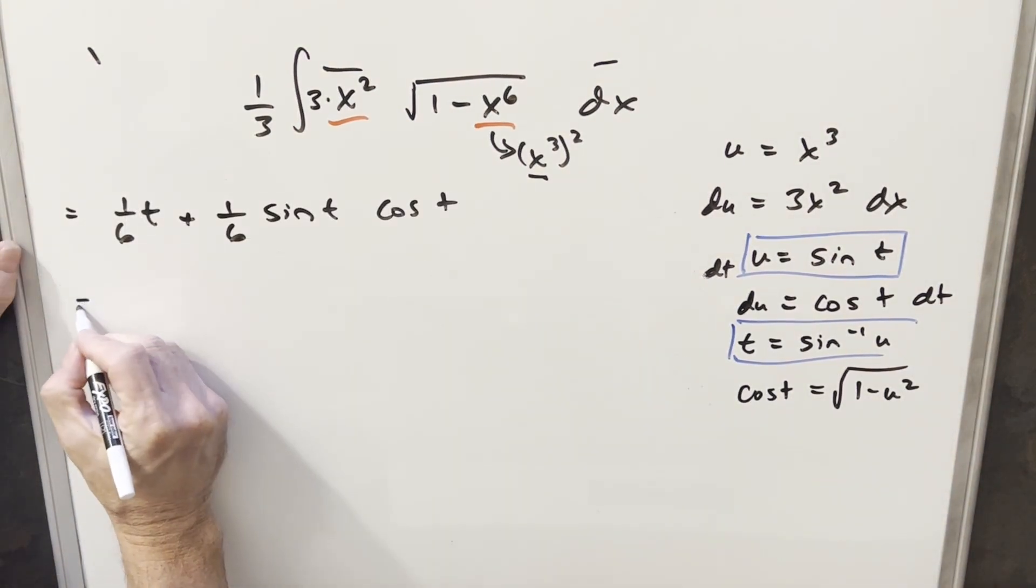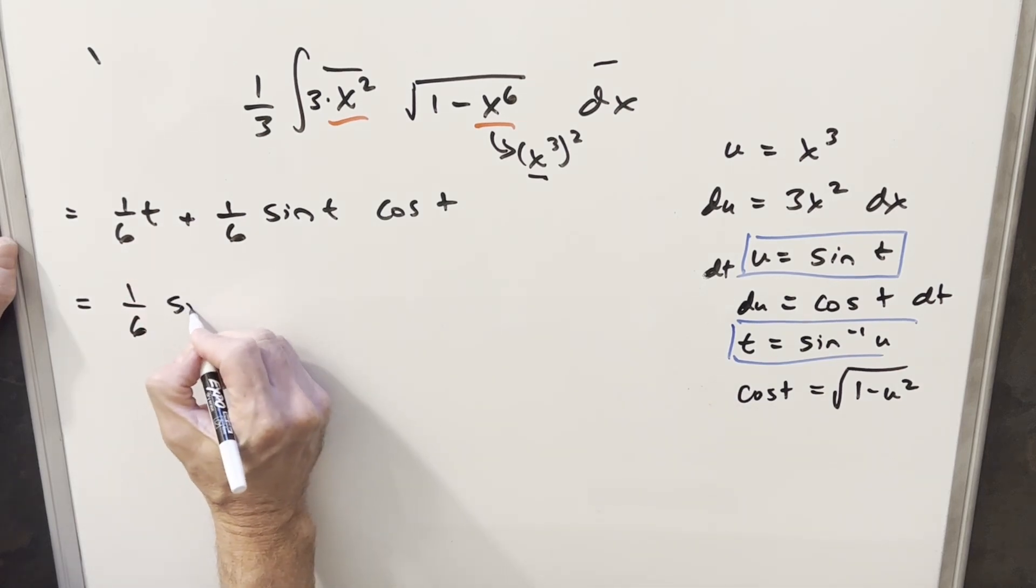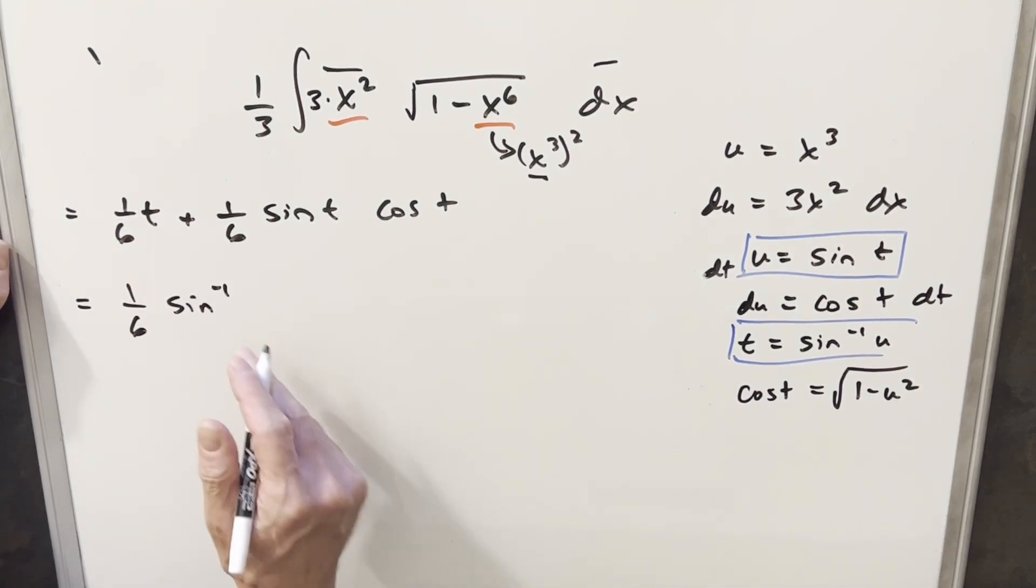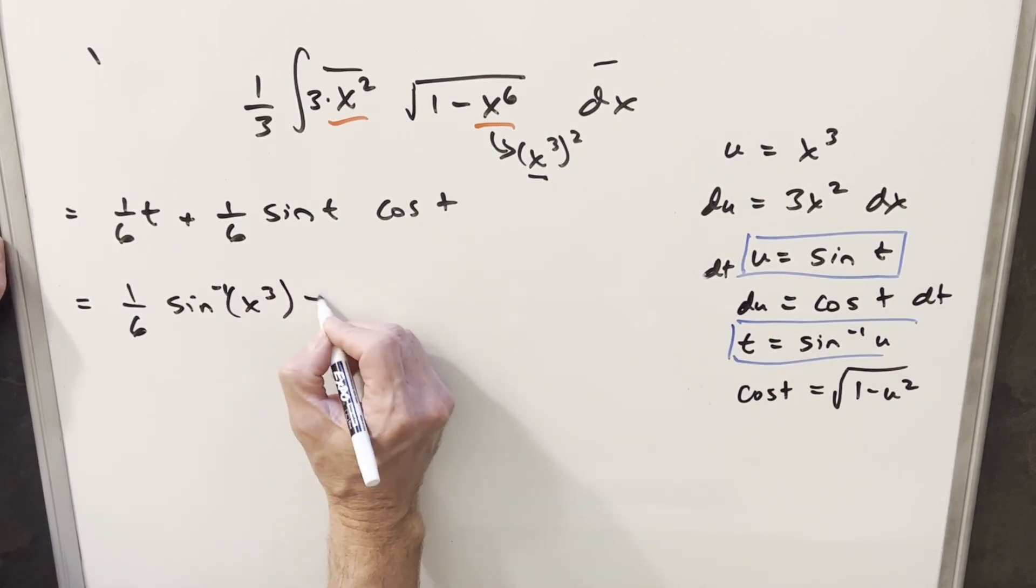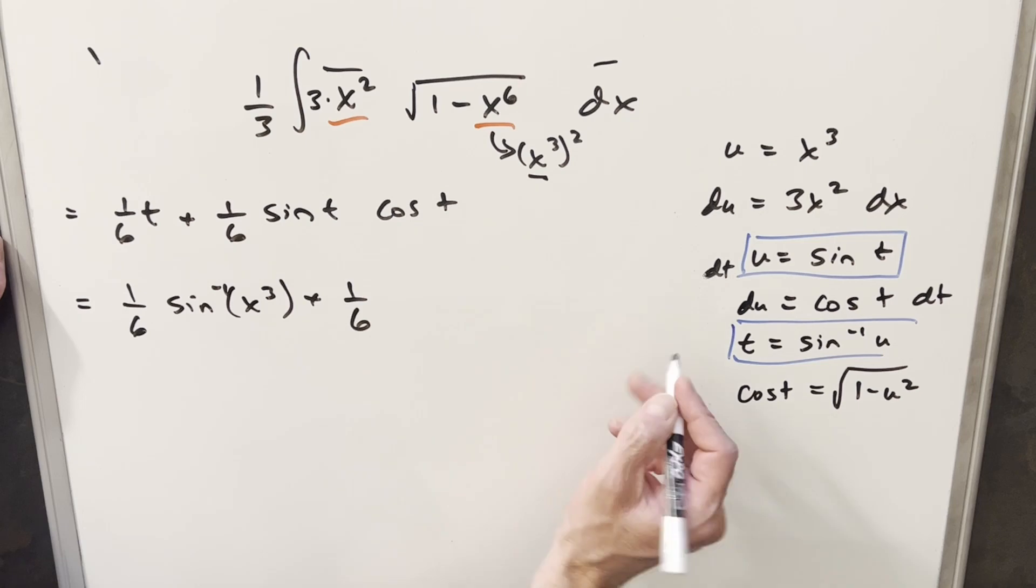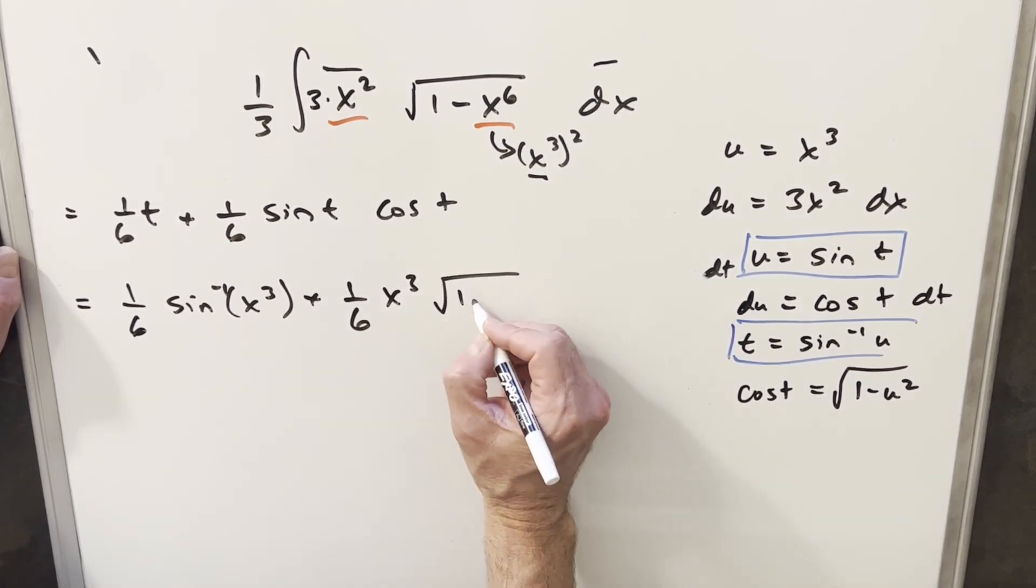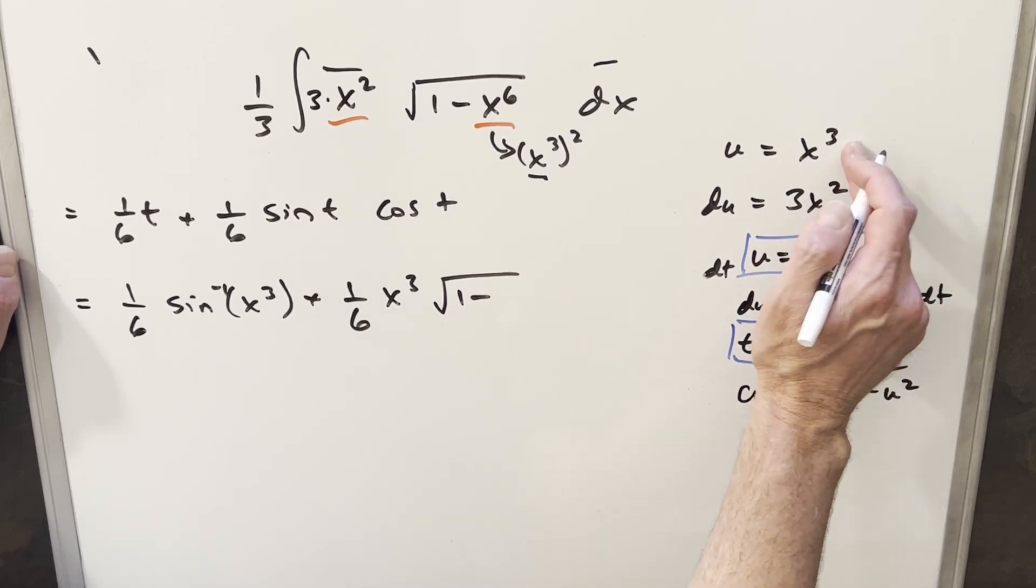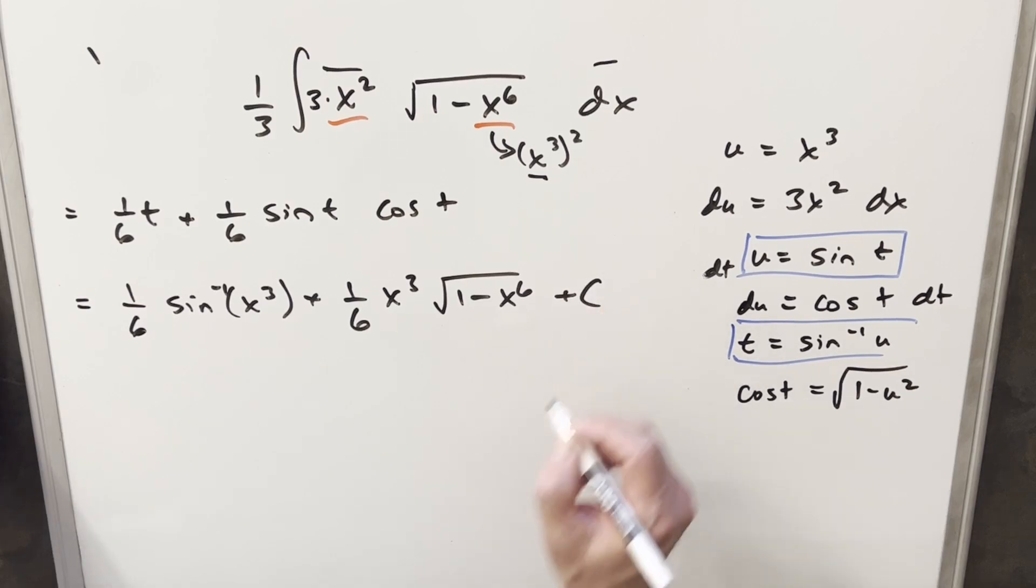And now we can just back substitute to finish this off. So here we're going to have 1 over 6t, which is going to be arc sine of u. But our u value is just going to be x cubed. So I'm just going to fill that in right now. Then we're going to have our 1 over 6 sine t is going to be u. But again, that's x cubed. Cosine t is going to be square root of 1 minus u squared. But u squared is going to be x cubed squared or x to the sixth. Just going to add a plus c on the end. And that's it.